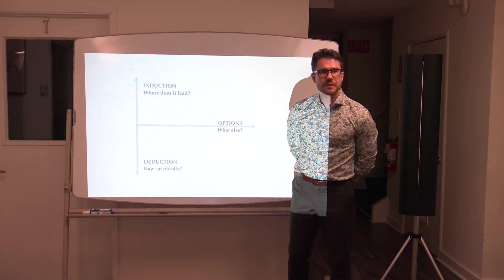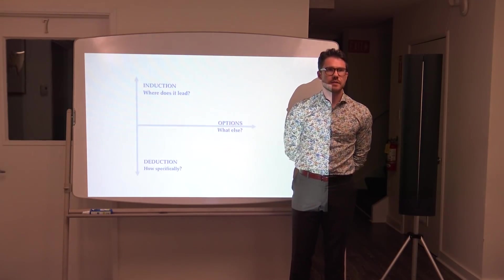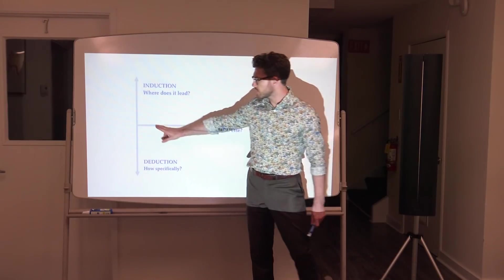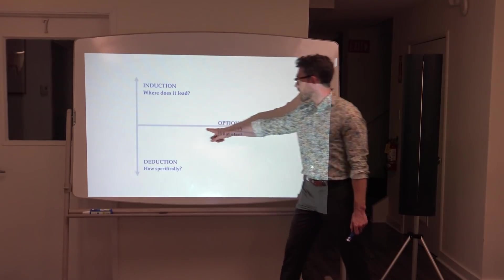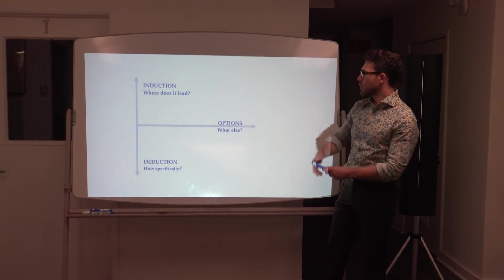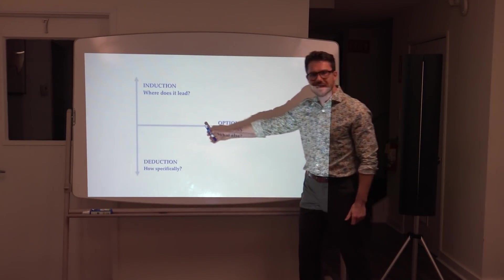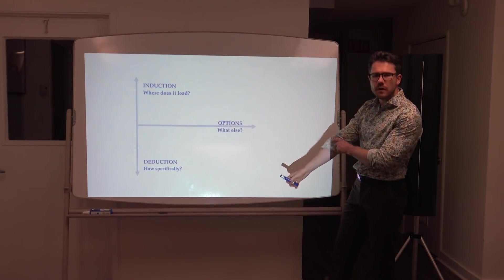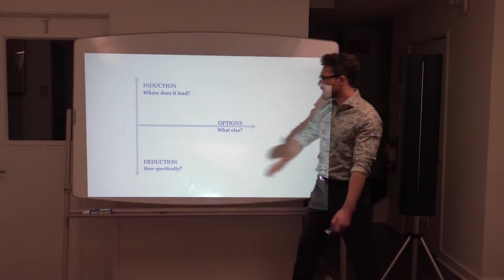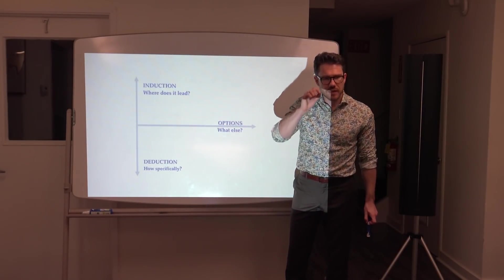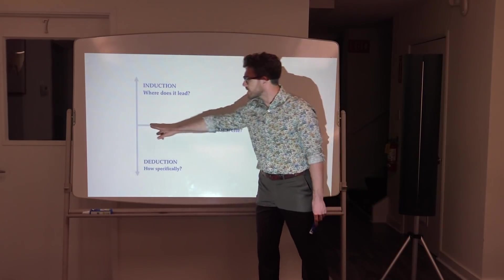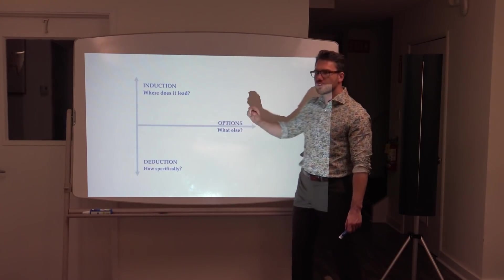If you think about it, the expectations we set towards ourselves on the deductive level are higher than in abductive or options level. Chunking sideways gives you a chance to be more elaborate. Chunking down gives you a chance to be more specific. But in case of linguistics, you can get more by doing less.